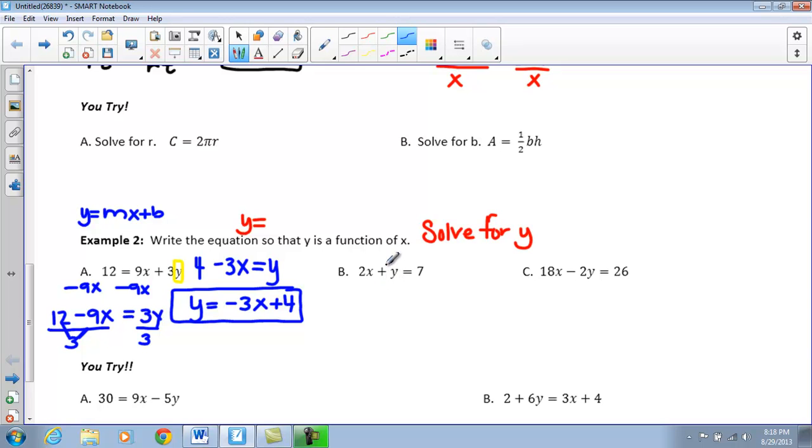All right. So, for our next one, we take a look. We are going to isolate our Y. So, what I am going to do first is I am going to subtract 2X from both sides. So, I have Y equals 7 minus 2X. So, what we are going to do is we are done. Our Y is all by itself.